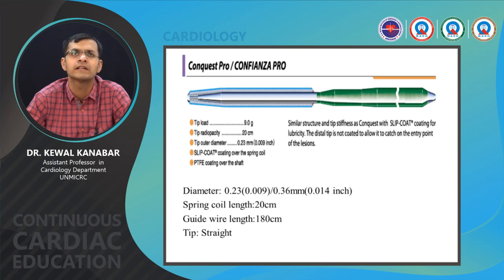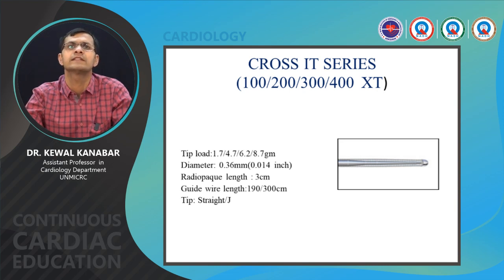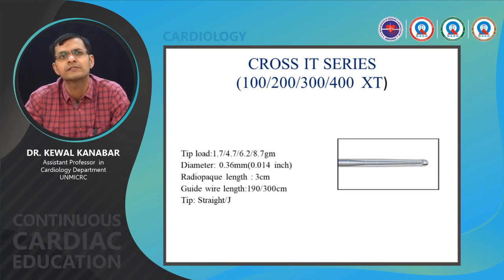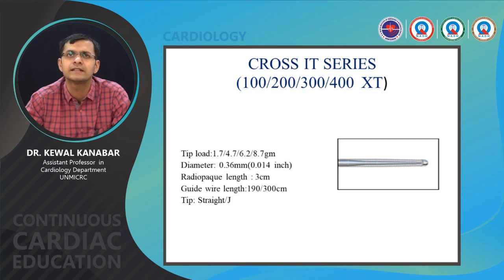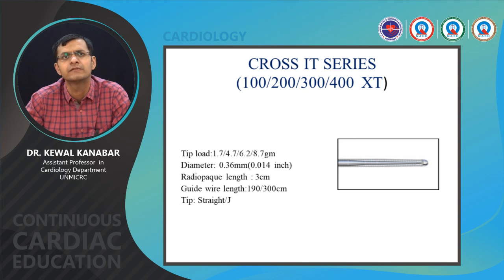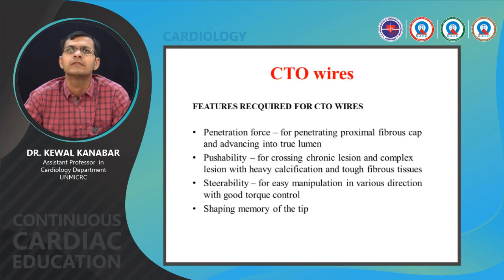The Crossit series comes as Crossit 100, 200, and 400 with tip loads of 1.7, 4.7, and 8.7 grams respectively. The Crossit 400 has a very high tip load of 8.7 grams. It is a 0.014 guide wire with a very short radiopaque tip of around 30 mm. Lengths come in 160 and 190 centimeters, and it is a straight or J-tip guide wire.